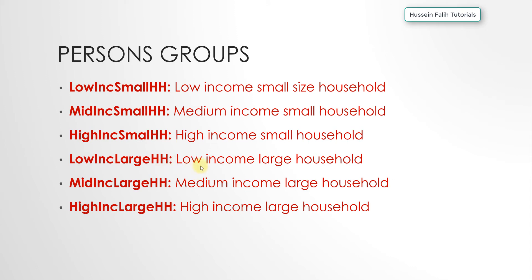Household size is also an important factor for demand segmentation. Here I have about six examples of person groups: low income large household, medium income large household, high income large household, and so on. We segment demand based on trip purpose because people going to work behave differently than people going to the shop, and their travel times differ.